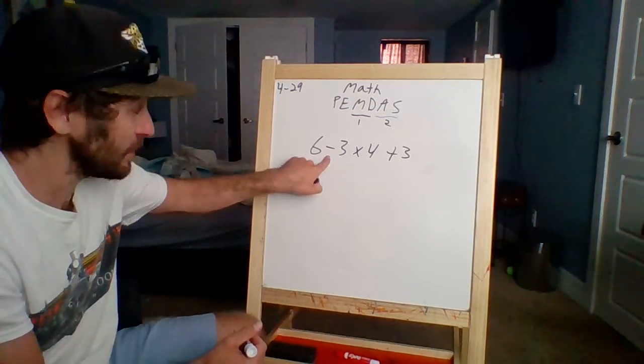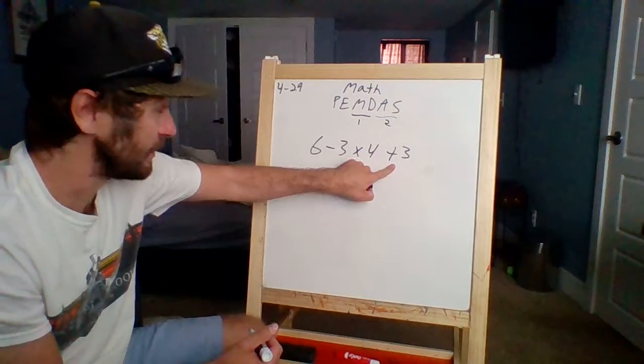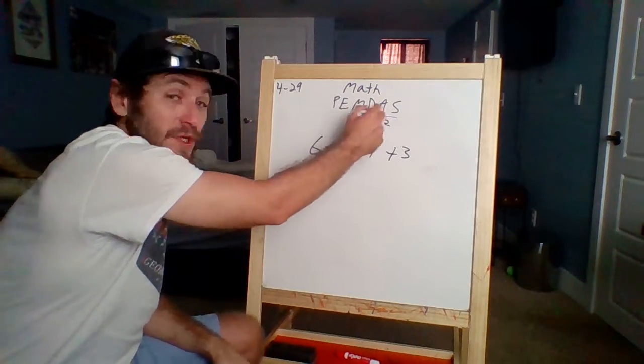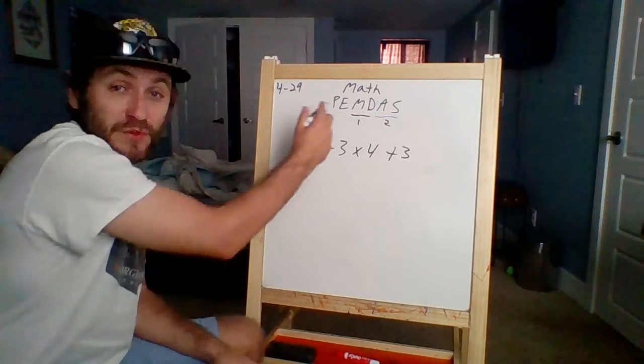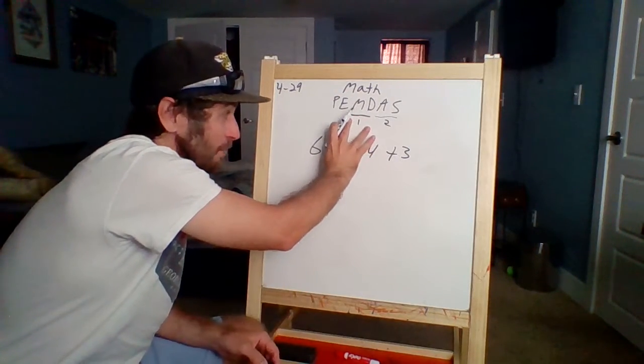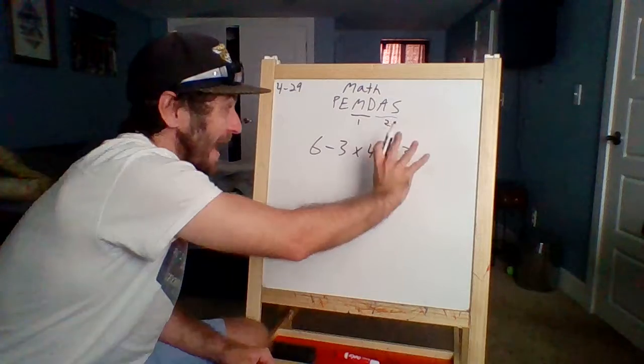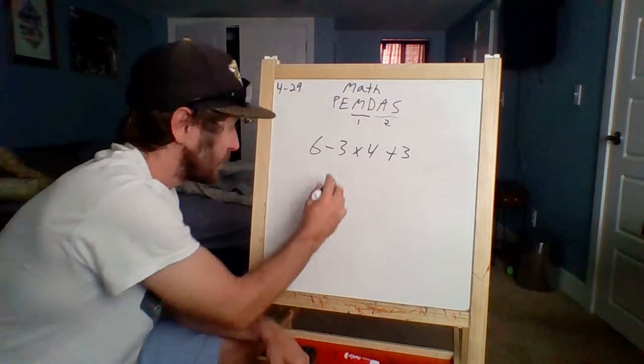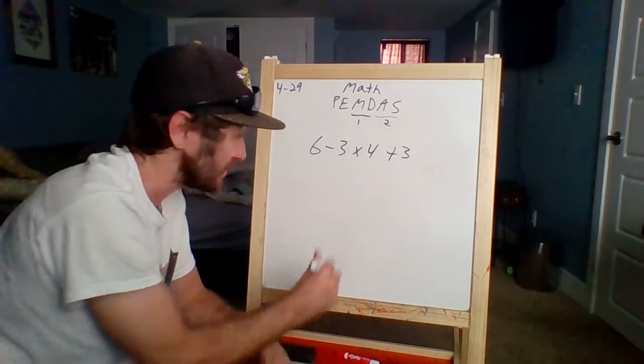All right, so I see subtraction, multiplication, addition. We will do addition and subtraction from left to right, and we will do multiplication and division from left to right. But we've got to do the multiplication or division before we do any addition or subtraction. So I'm going to do the middle part of this problem first.